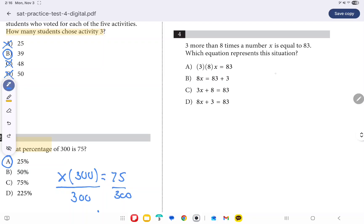Three more can be written as plus three. Eight times the number X is eight times, which means multiplication, X.